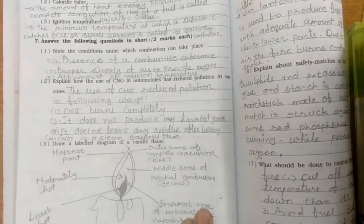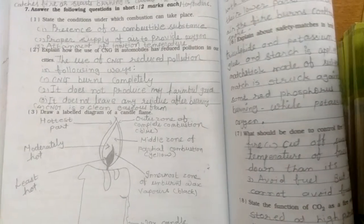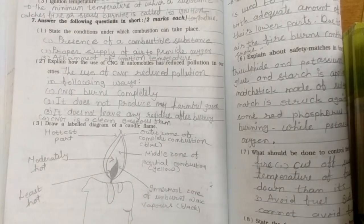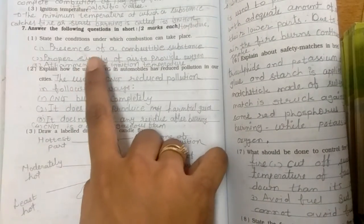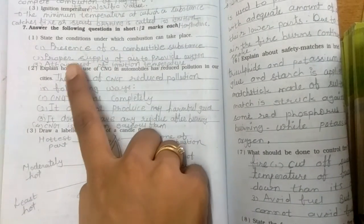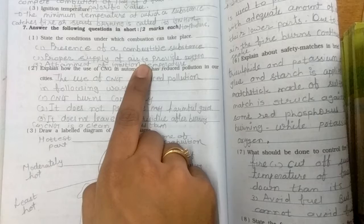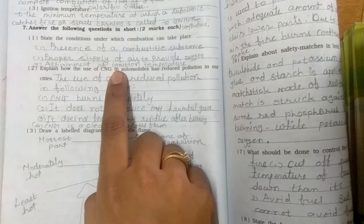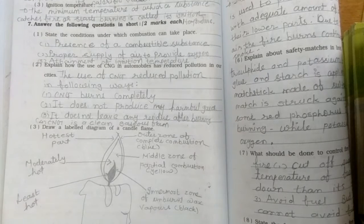Second, calorific value. The amount of heat energy produced on the complete combustion of one kg of a fuel is called its calorific value. Third, ignition temperature. The minimum temperature at which a substance catches fire or starts burning is called its ignition temperature. Now next, question number seven. Answer the following questions in short. First, state the condition under which combustion can take place. Presence of a combustible substance, second, proper supply of air to provide oxygen, third, attainment of ignition temperature.